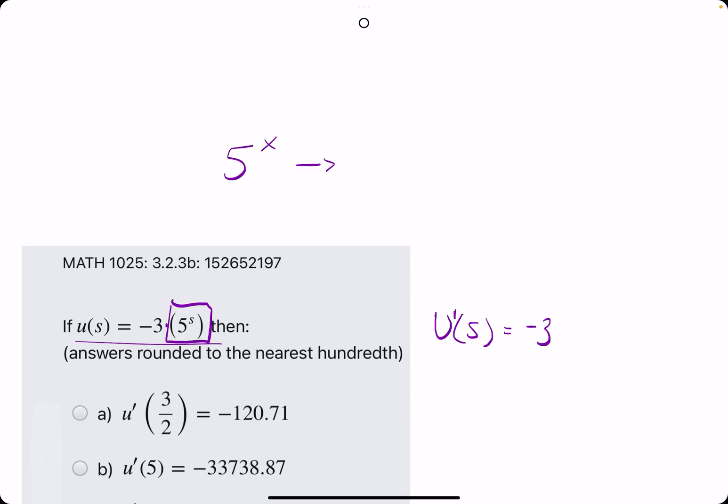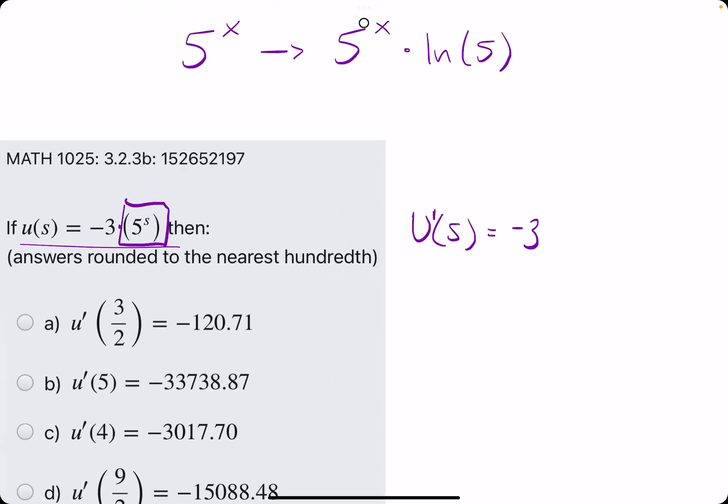a constant raised to the x. So it's an exponential function, so its derivative will be 5 to the x times ln, or natural log of 5. And so we'll just use s in place of x. So we will have negative 3 times 5 to the s times natural log of 5.